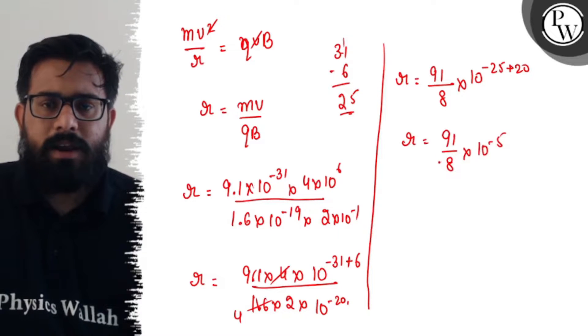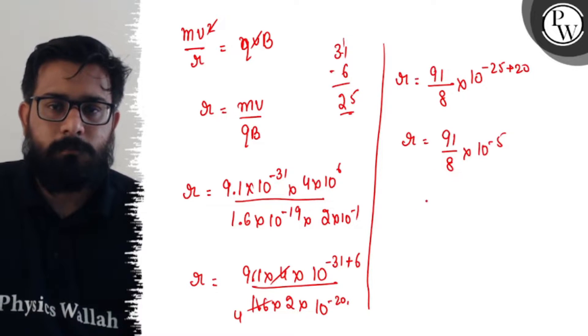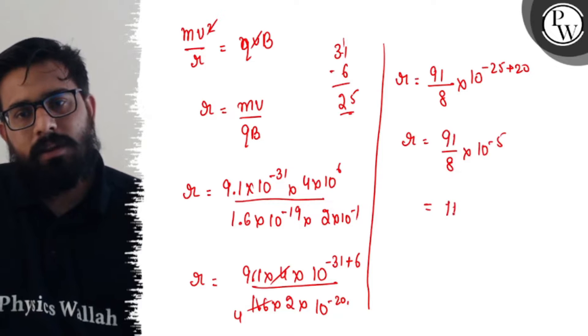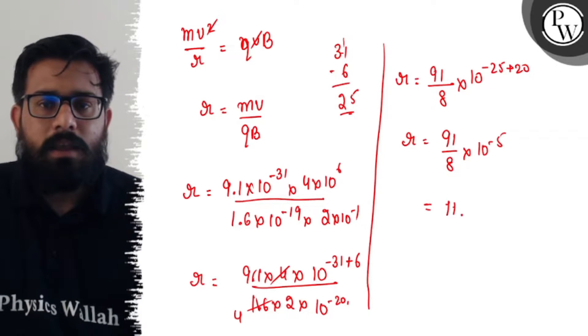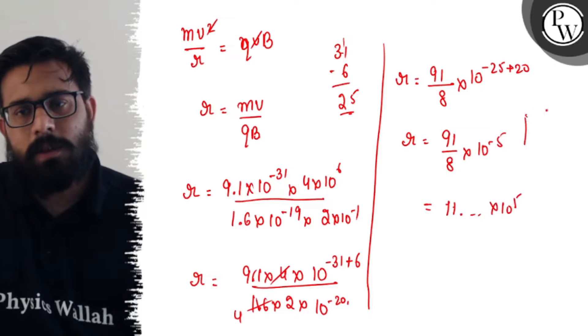You solve this part. 8×8 is 64, 8×9 is 72, so you have something like 11, 11×8 is 88, 11 point something × 10^-5. So let's solve this here.